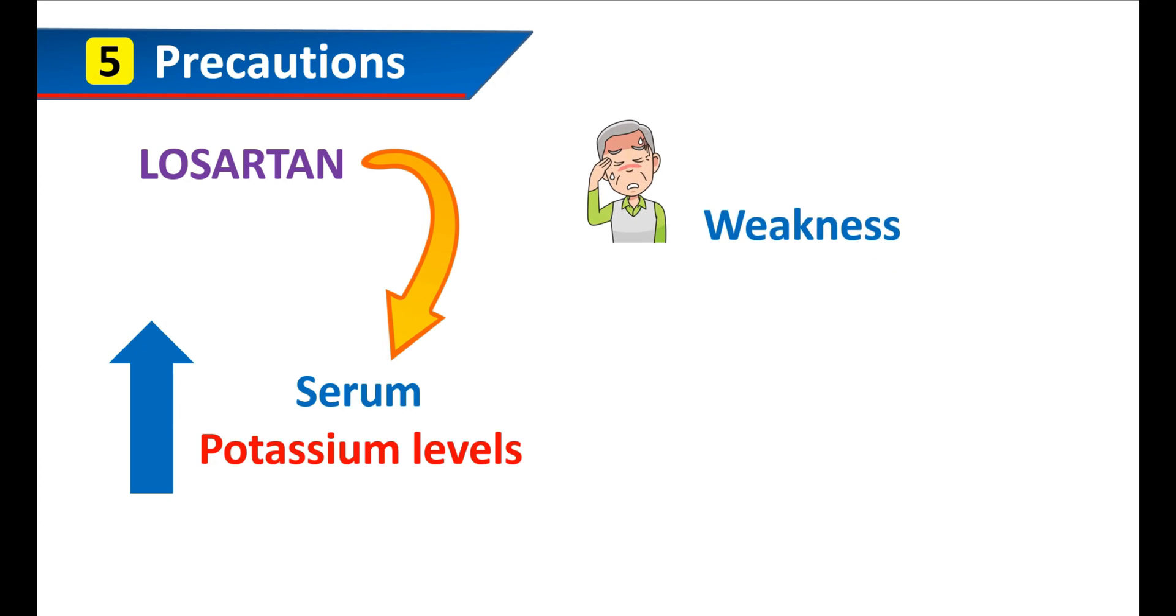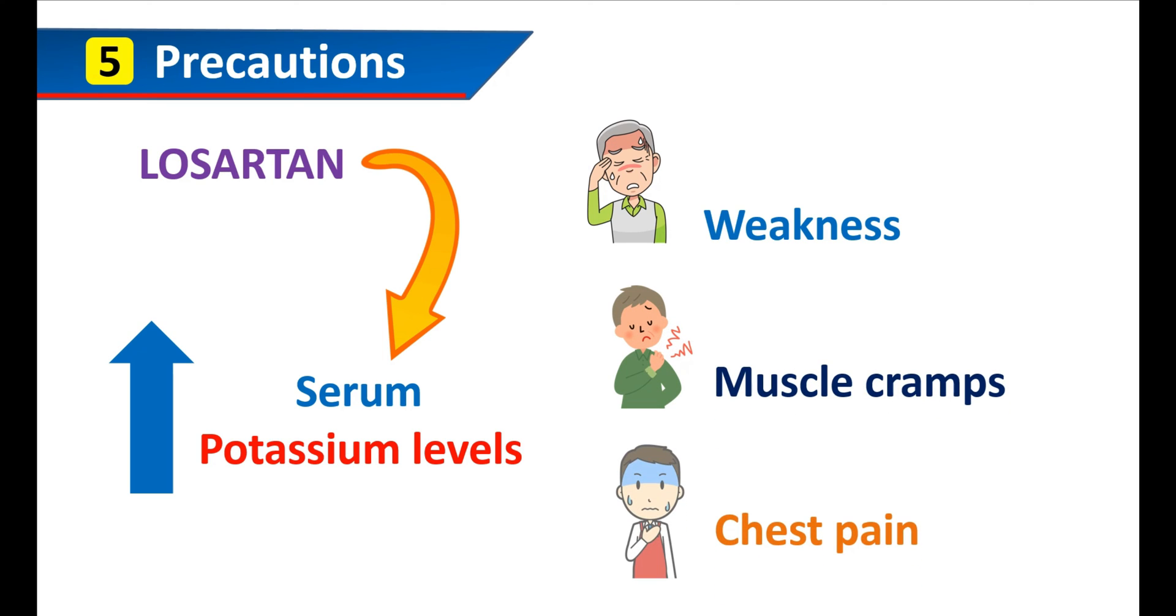If you observe any unexpected weakness, muscle cramps, muscle pain, chest pain, or palpitations, it may indicate elevated levels of potassium in your body. Elevated levels of potassium can be observed with long-term use of Losartan.